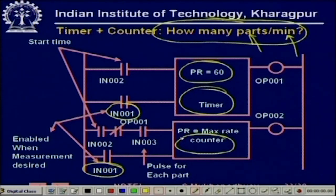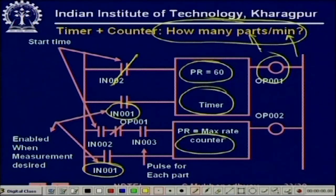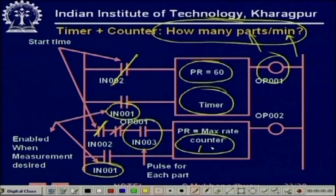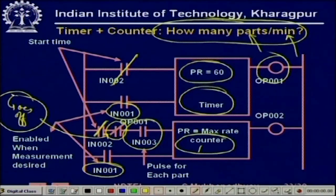When you say start — this is the master switch — and you want to know within this time how many parts have passed. You start the timer, this goes high, and every time a part arrives you get a pulse, so the counter goes up. In the meantime, after the time has expired, OP001 goes off, so this goes to 0 and further parts are not counted.